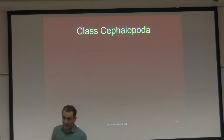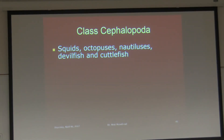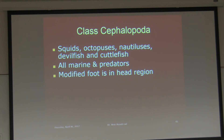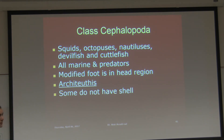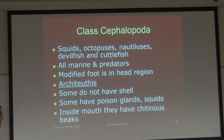The last class, which we do have specimens of in the lab, is Class Cephalopoda: squids, octopus, nautilus, devil fish, cuttlefish — all marine predators. Modified foot in the head region. Architeuthis is the name of the genus of the giant squid. Some do not have a shell, like octopus. Some have a modified shell like squids, inside the head region, which protects the brain. Some have poison glands. Inside the mouth they have chitinous beaks to crush food.